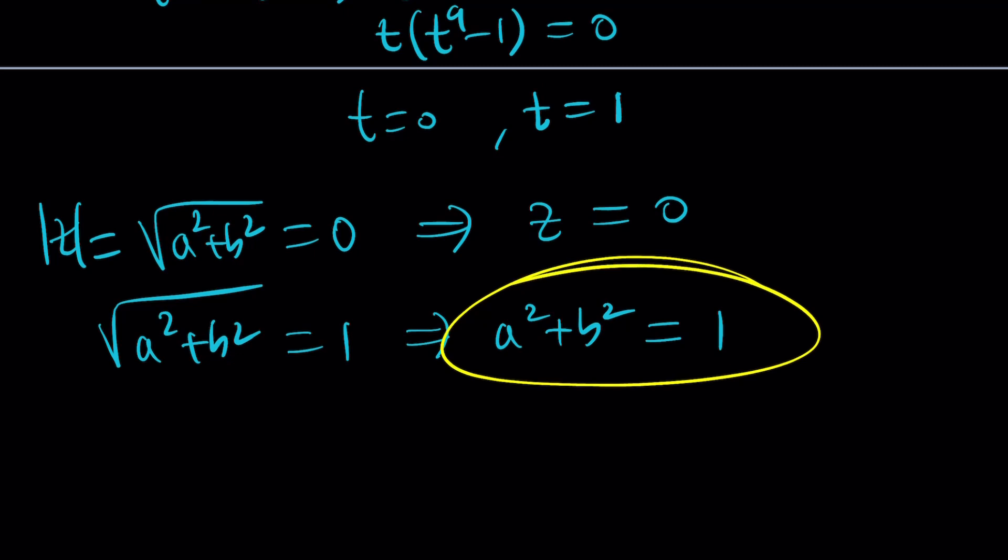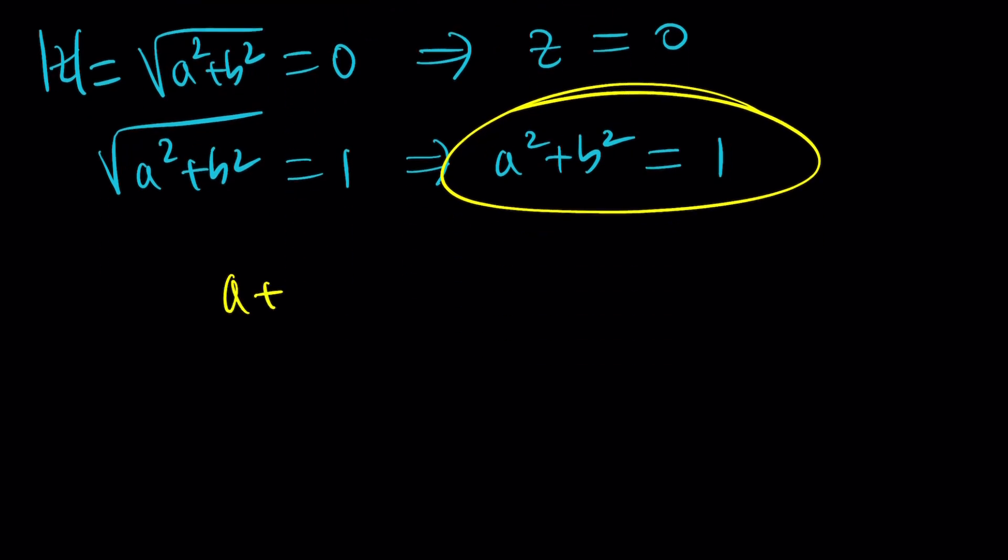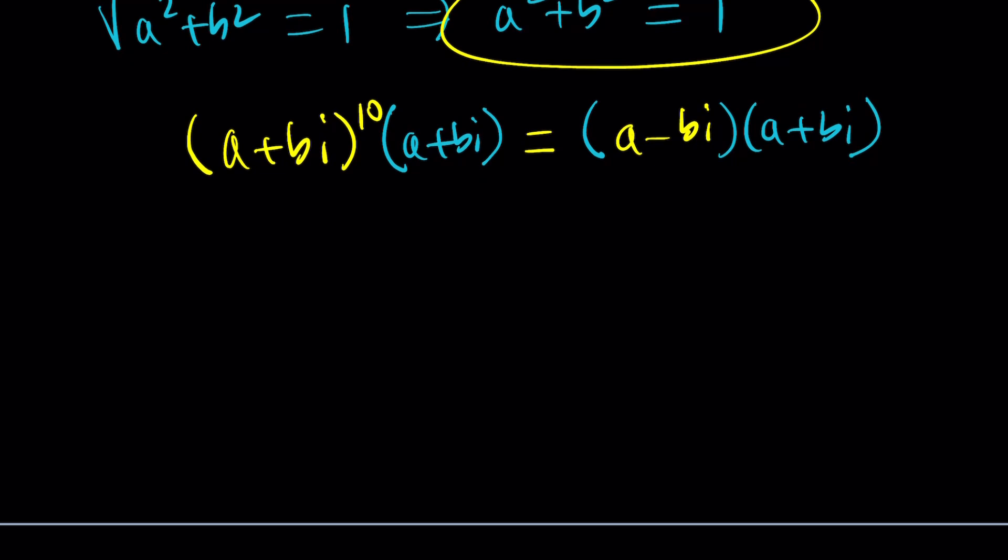Let's go ahead and take a look at our equation one more time. a plus bi to the tenth power equals a minus bi. I want to multiply both sides by a plus bi. And the motivation behind it is if you multiply two complex conjugates, you get a real number. When we multiply these two guys, we get a plus bi to the eleventh power. And on the right-hand side, we get a squared plus b squared from sum of two squares. Wait a minute. I know what it is. It's equal to 1. Replace that with 1. And now you get a really nice equation. a plus bi to the 11 equals 1.